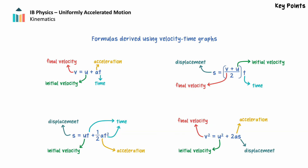To summarize, there are four uniformly accelerated motion equations, each with four variables. Provided three variables are known, an equation can be chosen and a problem can be solved. These formulas can be derived using a velocity-time graph for uniformly accelerated motion.